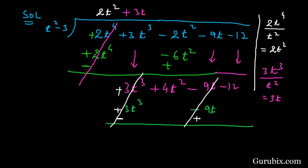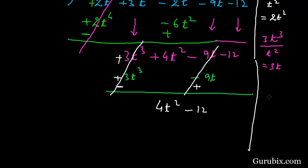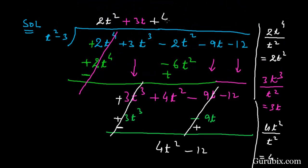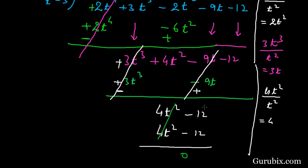After those terms cancel out, we have 4t squared minus 12. To find the next term in the quotient, we divide 4t squared by t squared, which gives us 4. Multiplying 4 by t squared minus 3 gives 4t squared minus 12. Subtracting 4t squared minus 12 from 4t squared minus 12 gives 0, and these two terms are cancelled out.